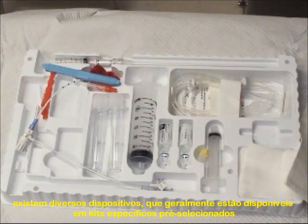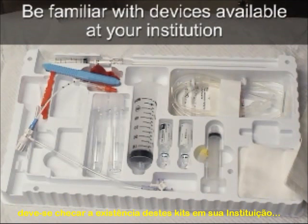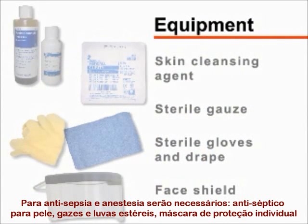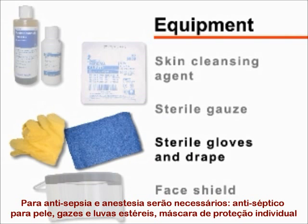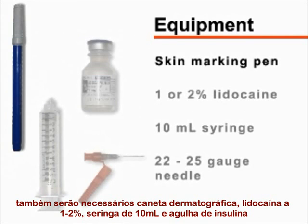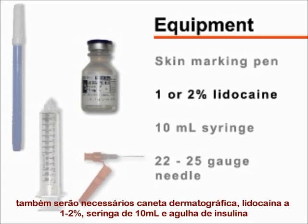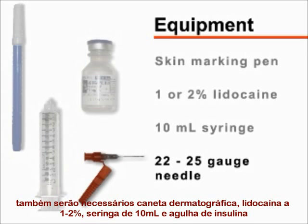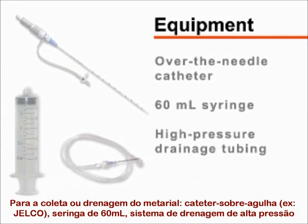There are various devices which are frequently assembled in pre-packaged kits that can be used to perform paracentesis. You should be familiar with the specific devices available at your institution. For sterile preparation and administration of anesthesia, you will need a skin cleansing agent, sterile gauze, sterile gloves and drape, a face shield, a skin marking pen, 1 or 2% lidocaine, a 10 milliliter syringe, and a 22 or 25 gauge needle.